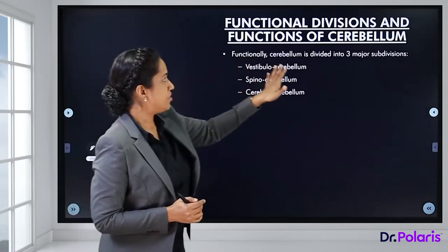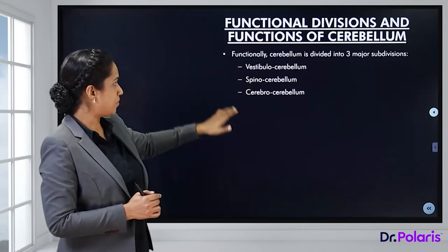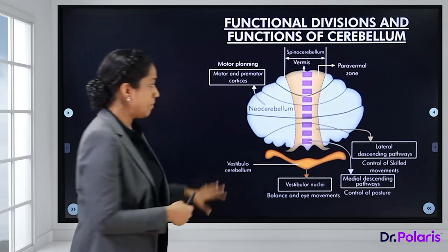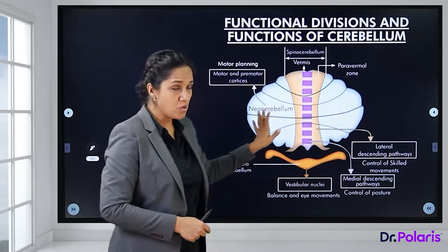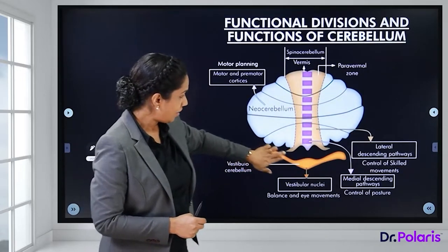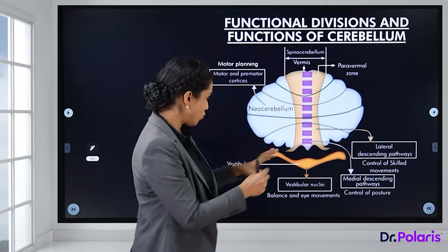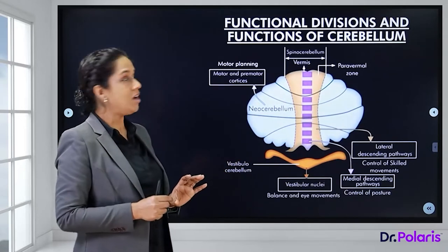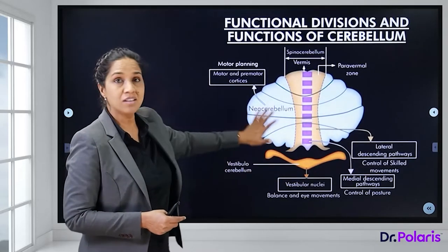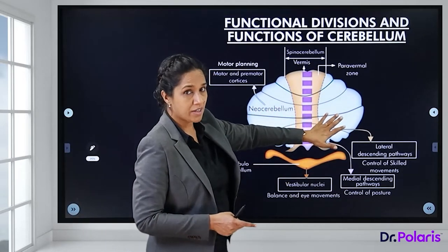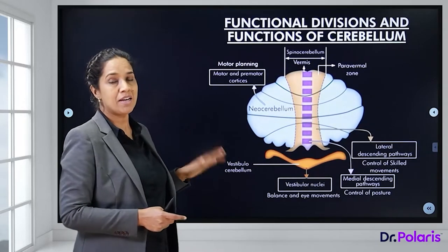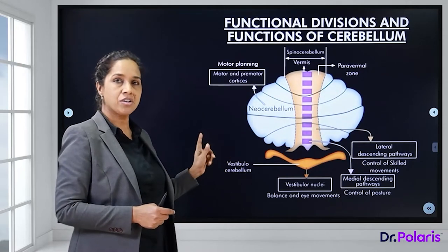Functionally, the cerebellum is divided into the vestibulocerebellum, spinocerebellum, and cerebrocerebellum. The cerebrocerebellum, also called the neocerebellum, is the large lateral area connected to the motor and premotor cortices and is required for motor planning. Any motor activity to be planned requires the action of the cerebrocerebellum.